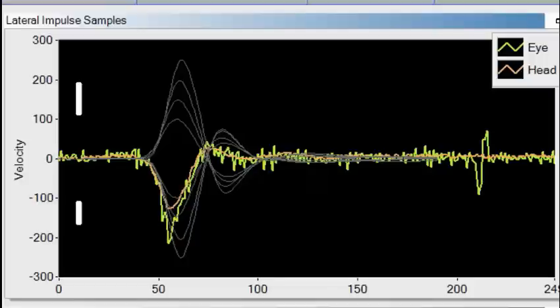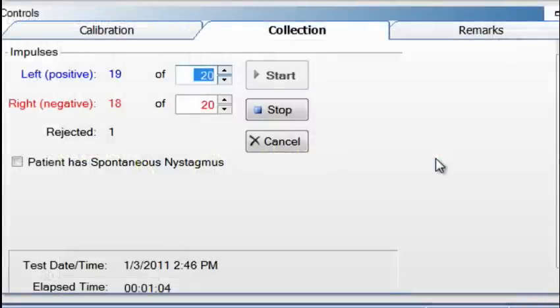The system automatically stops when the minimum numbers for left and right impulses have been reached. To manually stop the test, click stop. Data collection will be saved. Or cancel. Data collection will not be saved.